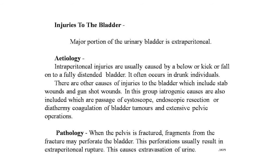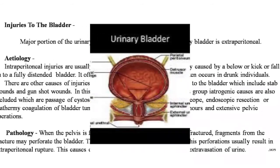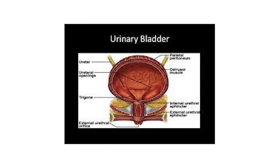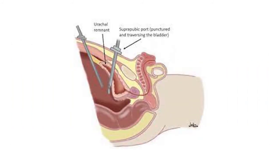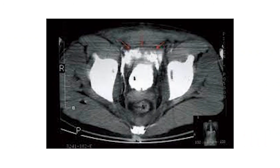Here is the anatomy of the urinary bladder — the trigone with both ureteric orifices and urethral opening is clearly seen, along with the ureter, bladder, prostatic urethra, and external urethral orifice. This is the image of iatrogenic rupture of the bladder — the suprapubic port is punctured, traversing through the bladder into the peritoneum. The extravasation of urine is clearly seen extraperitoneally on the CT film.